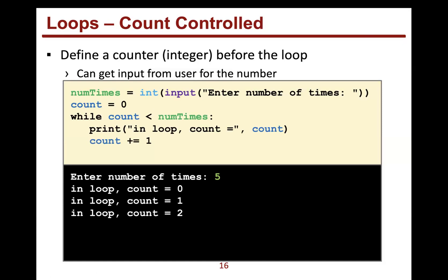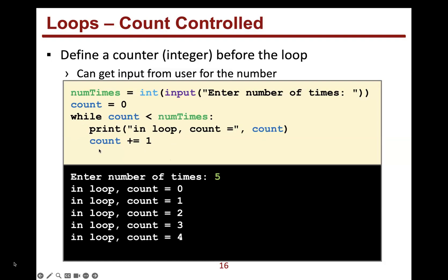It goes back up to the while loop, checks again, prints and increments: 0, 1, 2, 3, 4. When count reaches five, five is not less than five, so we exit. After the loop I print the count and you can see it equals five. That's an example of a count-controlled loop.